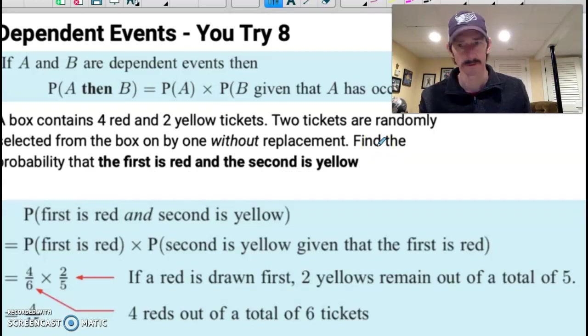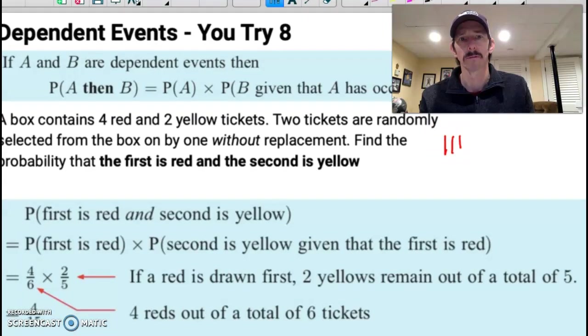All right. So here is your answer. Again, the probability that the first one's red is the same because there were 4 red tickets out of the 6. But remember, once I took that red ticket out, there were then only 5 left. 3 were red and 2 were yellow. And so if that's all that's left after I put the one red ticket in my pocket, that's why there's a 5 in the bottom. And notice that I'm now interested in a yellow ticket. And so there are 2 yellow tickets left in there. So red drawn first, 2 yellows still in there out of 5. I can multiply those together. And I would get 8 out of 30. And that reduces to 4 fifteenths.